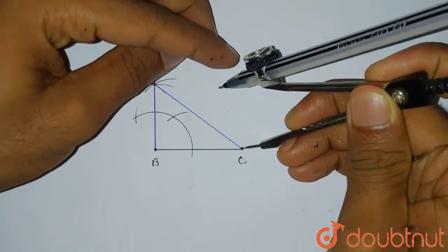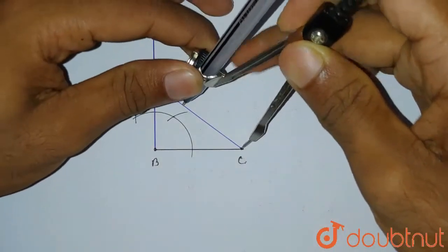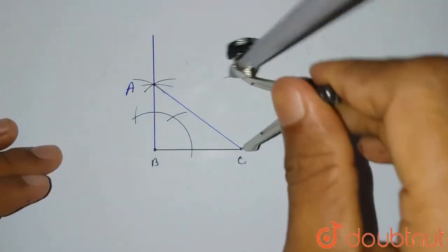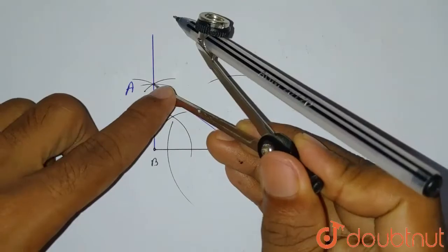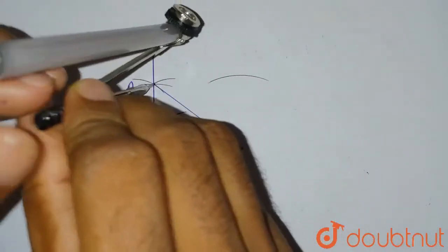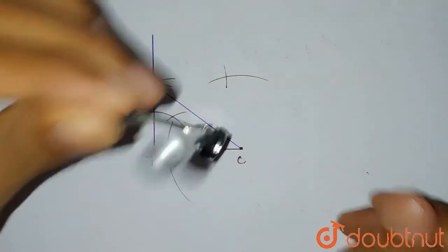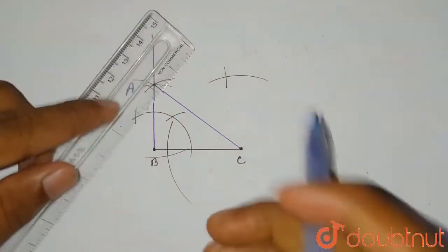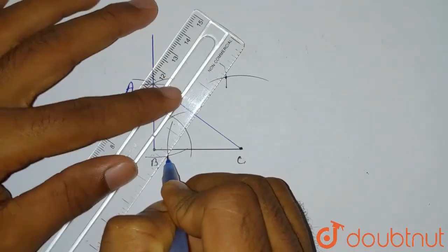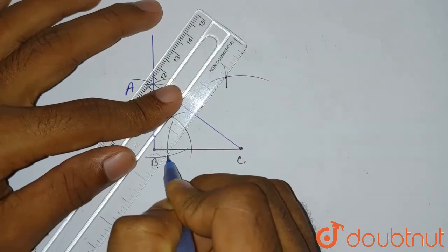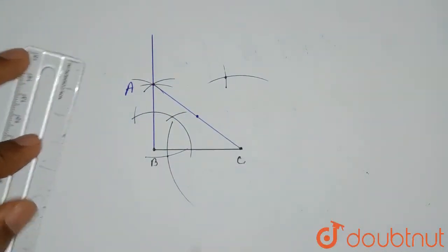From C point we'll take a length more than half of AC, then we'll draw two arcs. Similarly, from A point with the same length, we'll draw two more arcs which will intersect the previous arcs. These two intersecting points, if joined, give the perpendicular bisector of AC. We'll just indicate the midpoint — we don't need the full line, we just need that point.